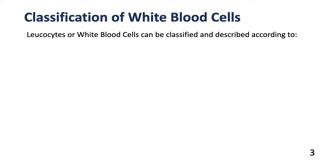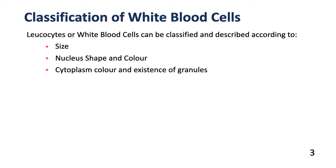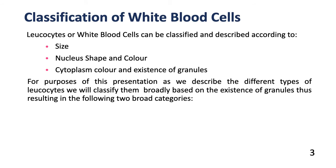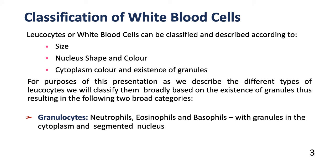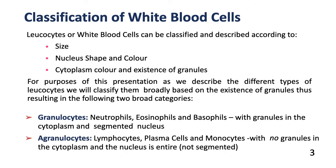We shall start with classification of the white blood cells. These are also called leukocytes and they can be classified according to the size, the shape of the nucleus, and the color of the cytoplasm and the existence of granules in the cytoplasm. We shall look at two broad categories: granulocytes, which have granules in the cytoplasm and a segmented nucleus — these are the neutrophils, eosinophils, and basophils — and agranulocytes, which have no granules and an entire, non-segmented nucleus — these are the lymphocytes and the monocytes.